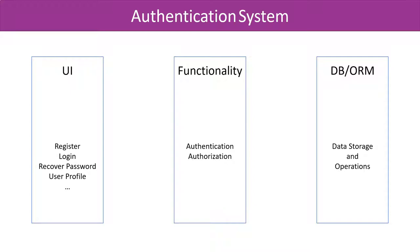If authentication fails, it will return HTTP 401, which is unauthorized. If authorization fails, it will return HTTP 403, which is forbidden. Last but not least, there is the database layer — the DB or ORM, or a combination — where user information, roles, and claims are stored.